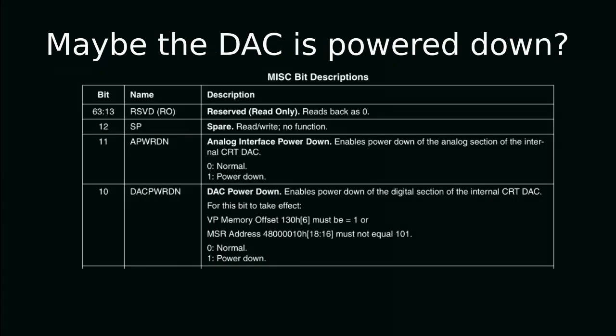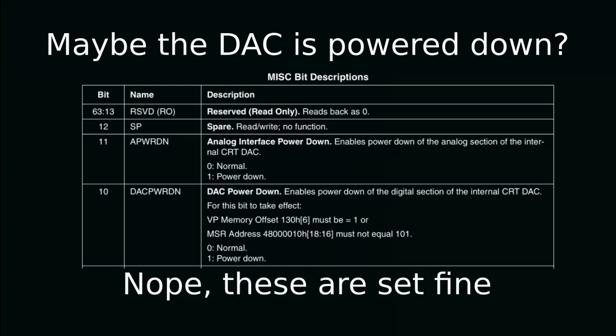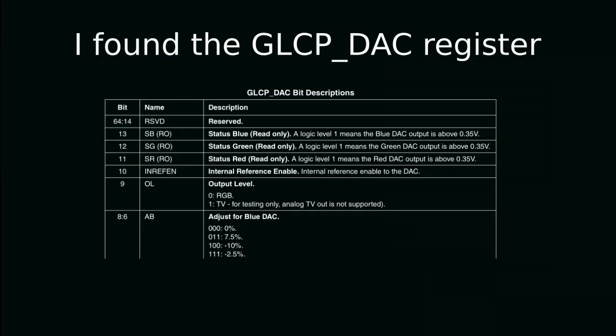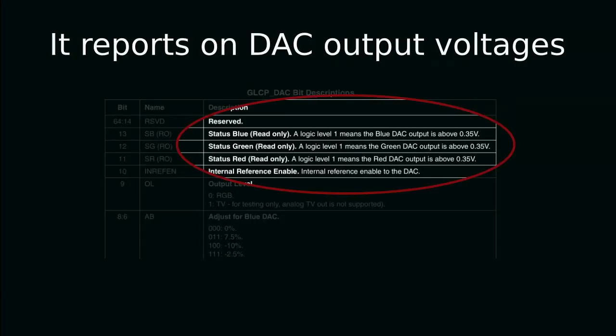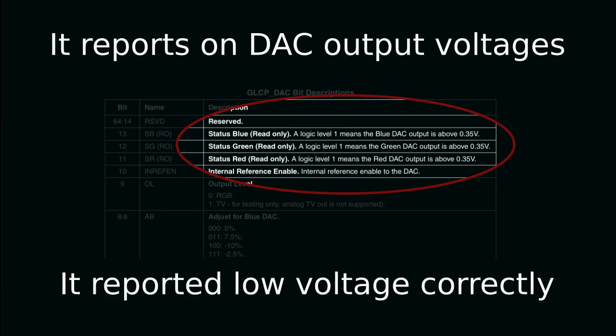So what else is there to check? I found a register that lets you set an external DAC VREF — changing it didn't help. The DAC Power Down register reports if it's powered down, but I confirmed these were set properly. I found the GLCP DAC register; it has fields showing the DAC output voltage and correctly reports the output as being low voltage. Well, that wasn't too helpful.